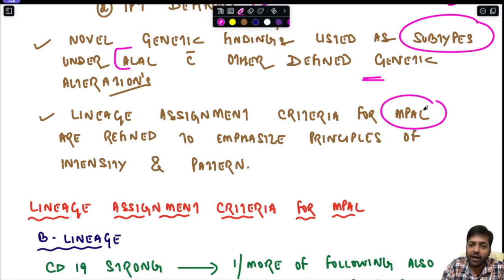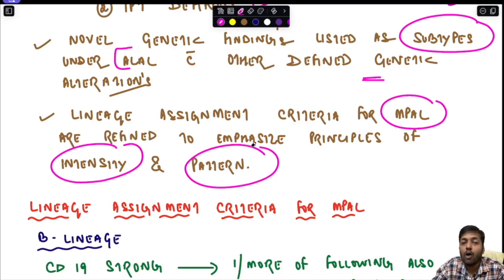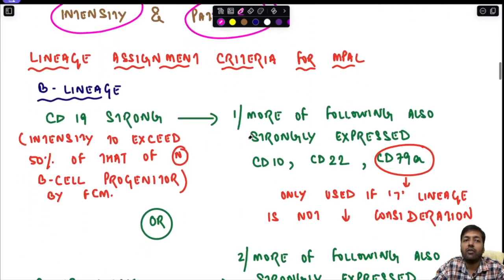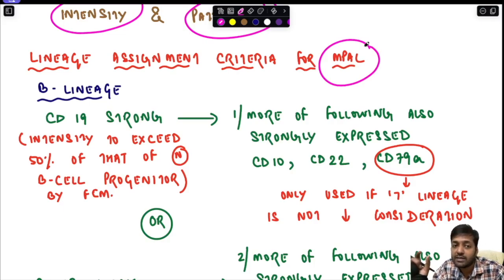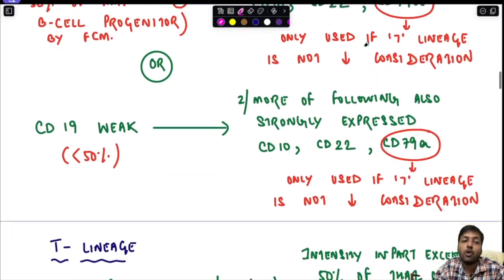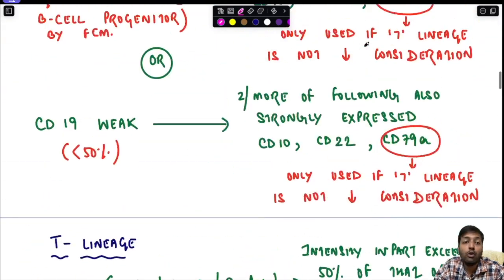The third important change is that lineage assignment criteria for MPAL are refined to emphasize principles of intensity and pattern. We will now see what intensity and pattern mean and how they are used for assigning a particular lineage to a cell — whether B lineage, T lineage, or myeloid lineage.